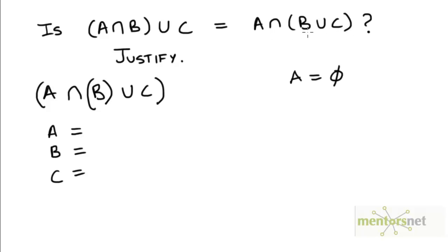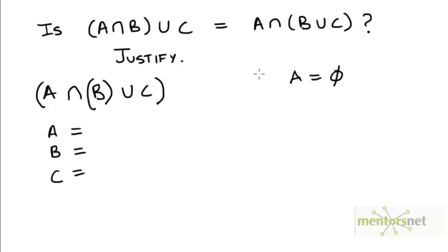Now let's look at the right-hand side. If A equals φ, then regardless of what B union C is, φ intersected with B union C would be φ. So we get C on the left-hand side and φ on the right-hand side. As long as we choose C to be some non-empty set, we would get a different set on the left-hand side and a different set on the right-hand side.